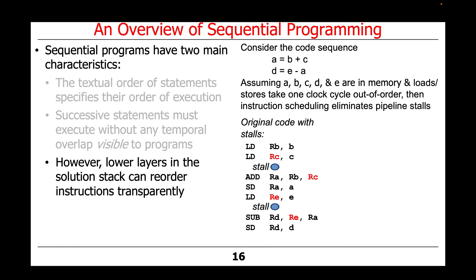The next step is to load the value of E from memory into register E. That again takes an instruction cycle. So there's a stall here if we do it this way, in which case we would then subtract A from E, store it into register D, and then store register D's contents into memory location D. That's the way it would be done if you didn't do out-of-order execution.